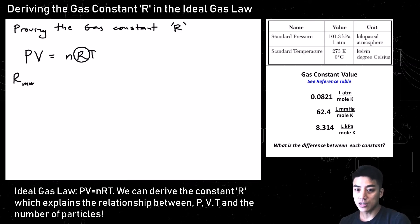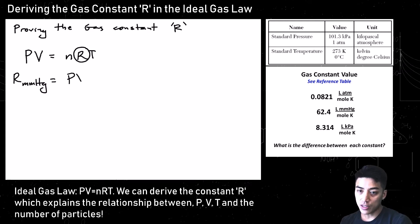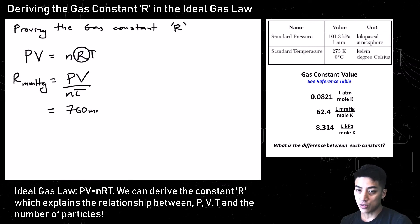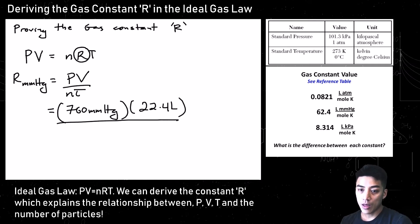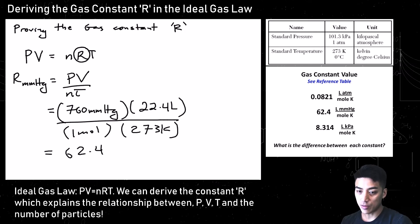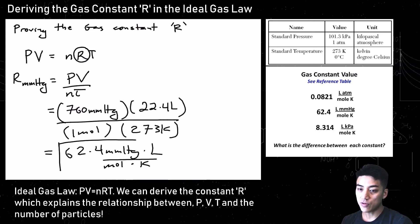This one is less common, but here's the gas constant in terms of millimeters of mercury. Solve for R: plug in pressure times volume over nT at standard temperature and pressure. Standard pressure in mmHg at sea level is 760 mmHg. With 22.4 liters of volume per 1 mole and 273 Kelvin for temperature, you get 62.4 millimeters of mercury times liters over mole K — and you can see that value in the reference table.